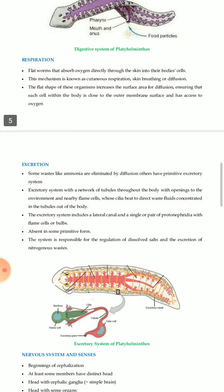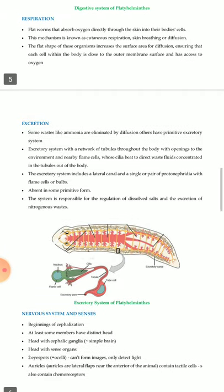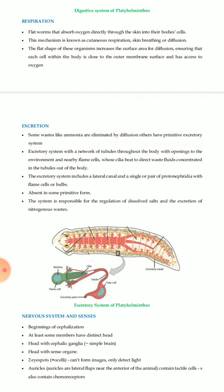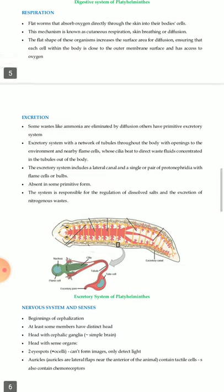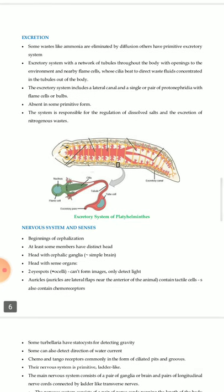The pharynx secretes enzymes to partially digest food before sucking in the liquefied food. Digestion is extracellular, with digested material taken into gut lining cells by phagocytosis. Respiration: flatworms absorb oxygen directly through the skin into their body cells — a mechanism known as cutaneous respiration, skin breathing, or diffusion. The flat shape increases surface area for diffusion, ensuring each cell is close to the outer membrane and has access to oxygen.